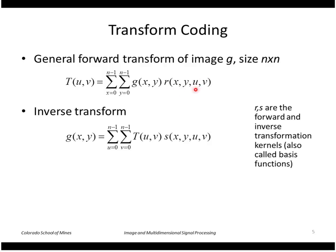r is also n by n and has coefficients u and v, so the resulting transform coefficients will be a function of u and v. To do the inverse transform, we do the same thing: sum of products with those transforms T(u,v) with an inverse transformation kernel which is also n by n.